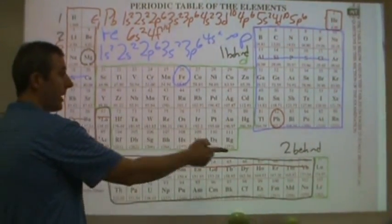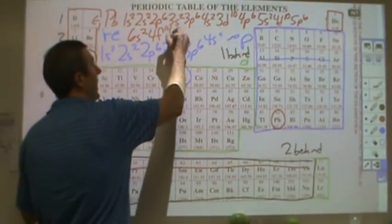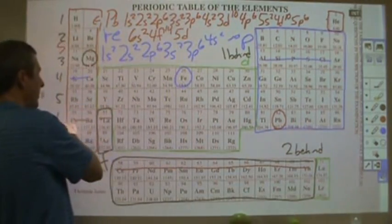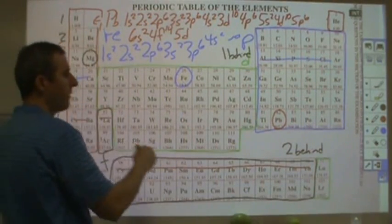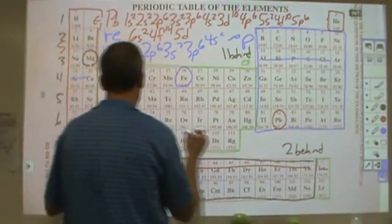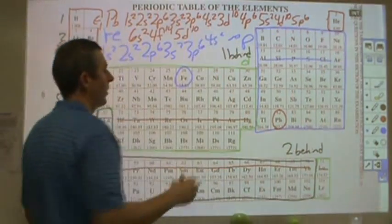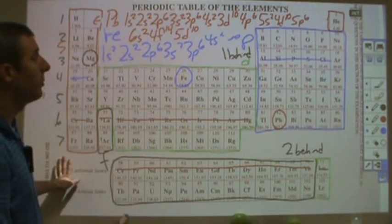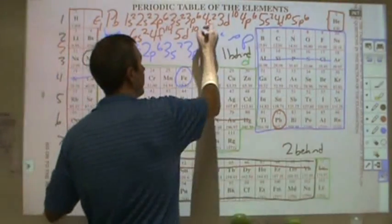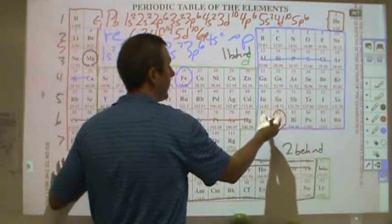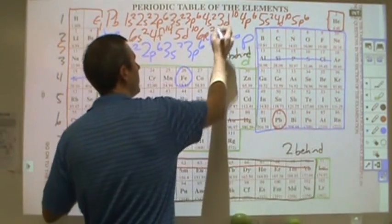Now, after 4f14, I'm now at lutetium. Now I'm in 5d land. So I'm in the sixth row. I'm in the d block. I'm one behind 5d. So 5d1 through all the way through 5d10. Now I'm at the final point. Now I'm at my square. So I'm in the 6p. And I've got 1, 2. So 6p2.